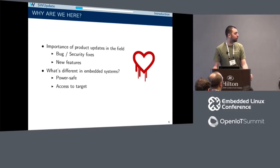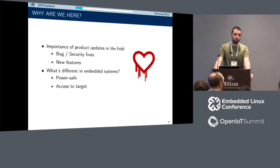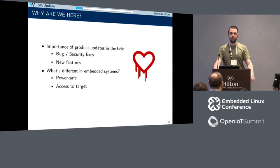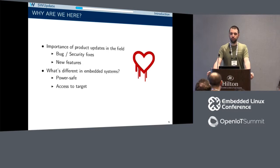Why do we need a software update solution for your embedded device? The first and most important reason is for bug fixing and security issues. A few years ago there was a huge issue in the OpenSSL library with the Heartbleed vulnerability. Basically all secure communication with different devices was no longer secure. When working with devices, you don't necessarily have physical access — sometimes they're in space or in the middle of the ocean. So you need a way to update your device to fix those bugs and security issues.